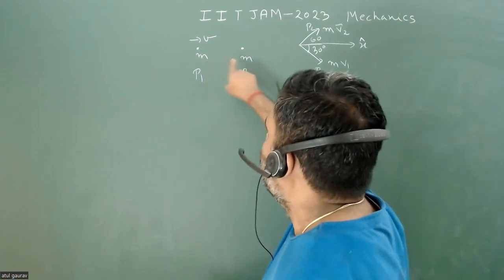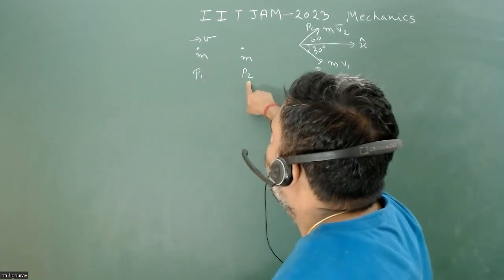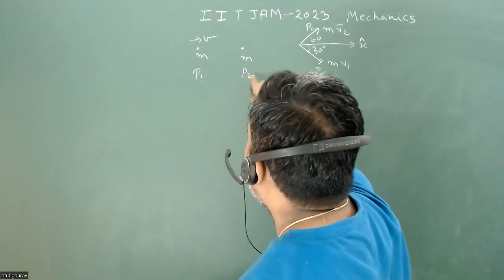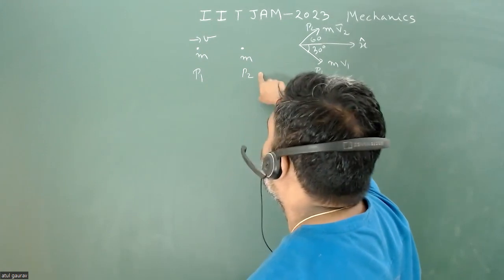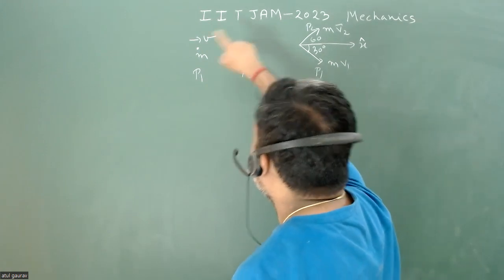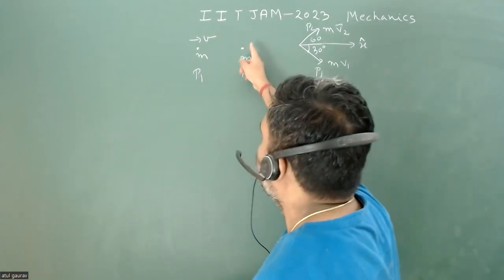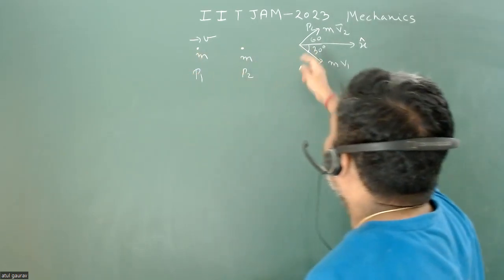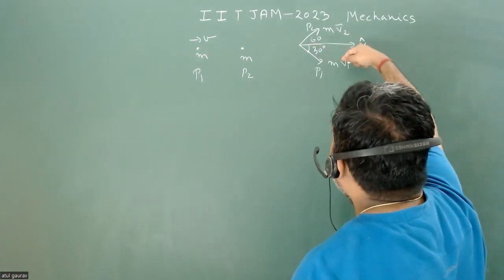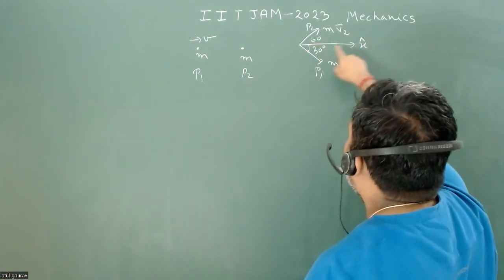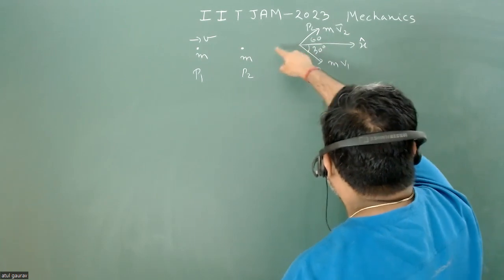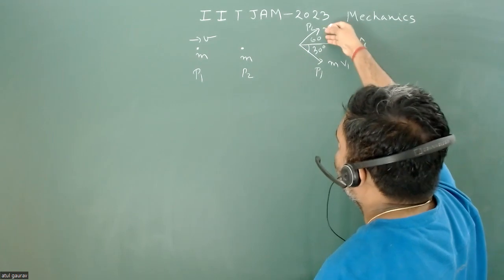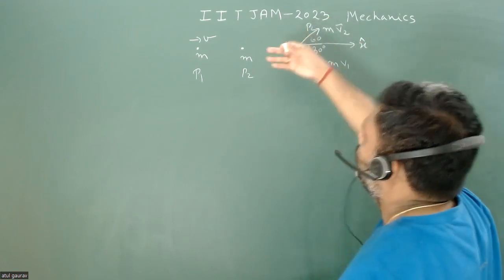There is one particle P1 and another particle P2. Particle P1 is moving with velocity V and is just going to collide with particle P2. P2 is initially at rest before the collision. Both have the same mass. After the collision, particle P1 makes 30 degrees with the line of action, which is my x-axis.